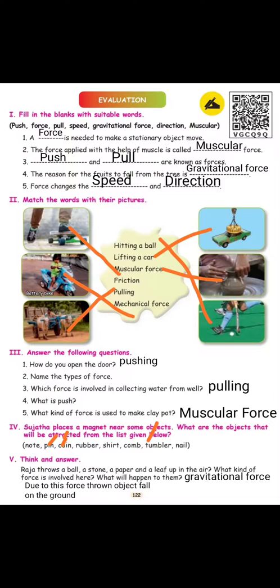Answer the following. Now we are going to go to the 4th and 5th questions because they are very simple. What I am saying is that there is a magnet. If you have any iron content near the magnet, you will be able to attract that object. You can understand better with that.